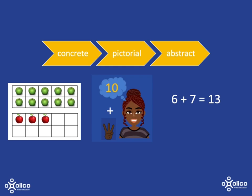And then as they become more and more familiar with that, eventually it'll just become a known fact. Then as they see 6 plus 7, they'll immediately know the answer is 13.